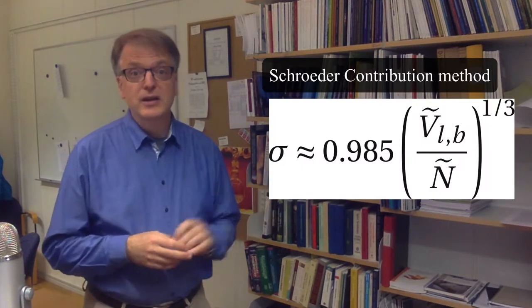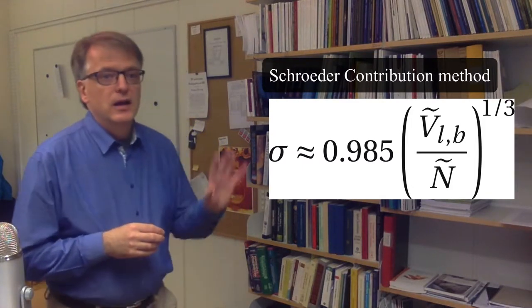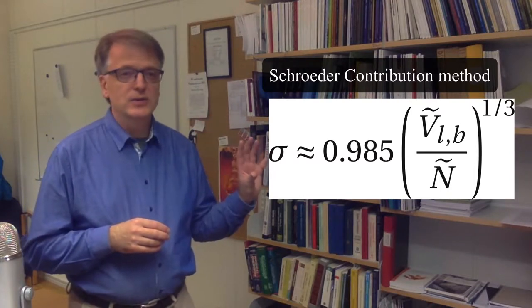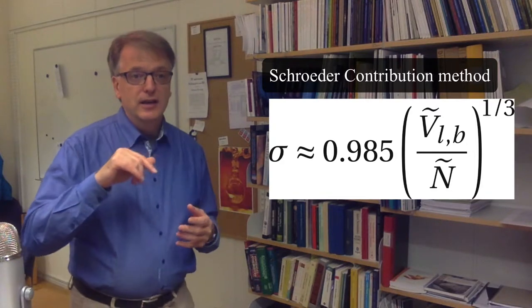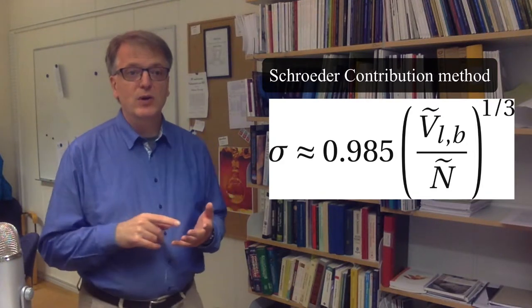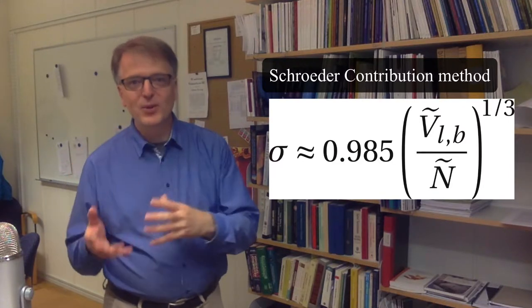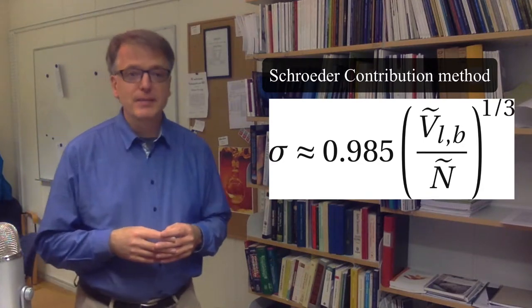But the equation that we will use and is often used is this one, which is similar to the equation if you would assume close packing. So the characteristic collision diameter sigma equals 0.985 times the cubic root out of the this molar volume expressed in SI units divided by Avogadro's number.